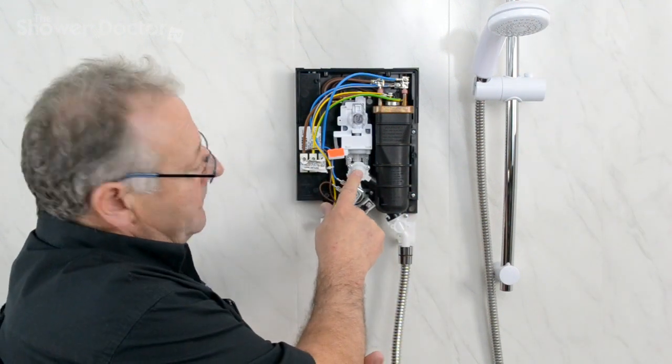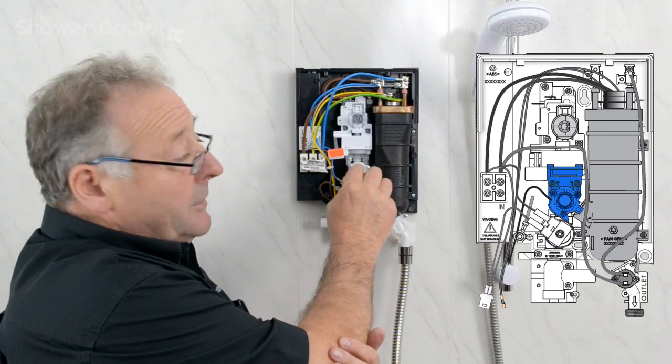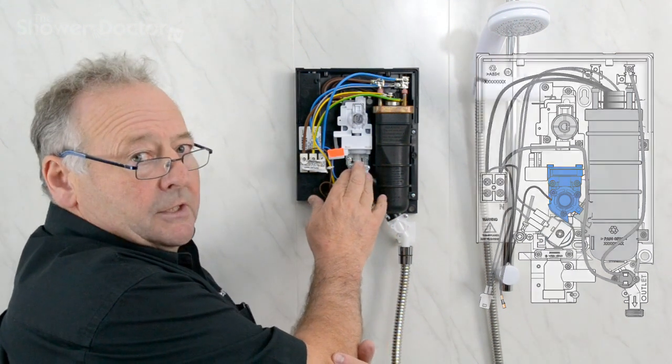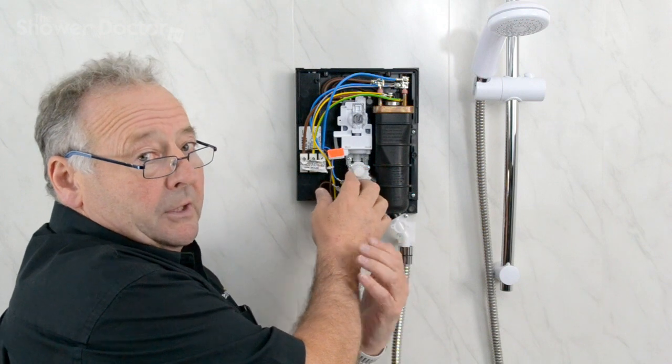The part that we're going to replace is this part here, the flow valve. This is probably not the easiest part to replace, but it's right in the middle of the shower and it demonstrates the kind of problems you're likely to meet as you're repairing the shower.